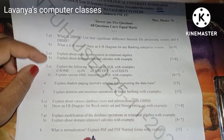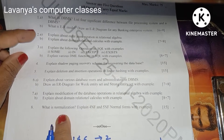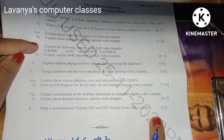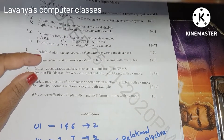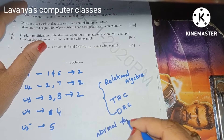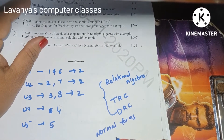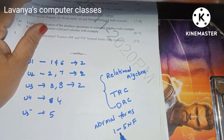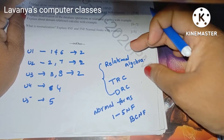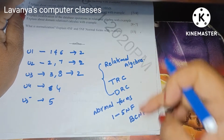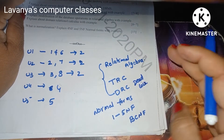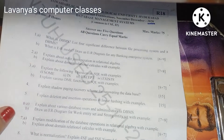Question 8 is a very very important question: what is normalization, explain 4NF and 5NF normal forms with example. In the March 2022 paper they asked 1NF, 2NF, 3NF. So read 1NF through 5NF very carefully — first, second, third, fourth, fifth normal form, and also BCNF. Without reading relational algebra, tuple relational calculus, domain relational calculus, normal forms, and deadlock, you cannot pass. I will prepare one more video separately on these very important topics.